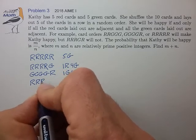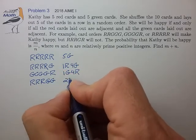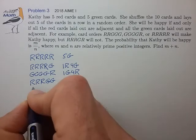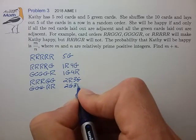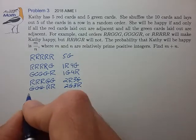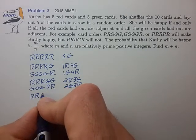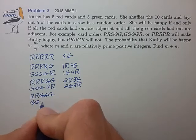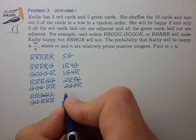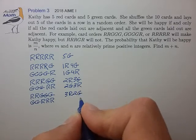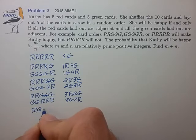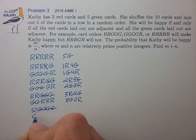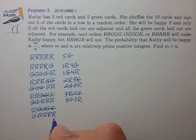Continuing, we have 3 red and 2 green, leaving 2 red and 3 green to the right. And 3 green and 2 red, leaving 2 green and 3 red to the right. Keeping going: 3 red and 2 green, and the complement 1 green followed by 3 red.